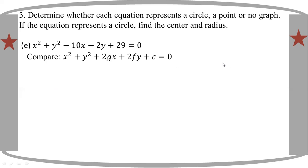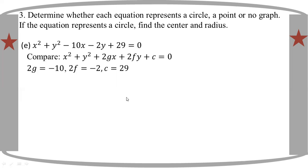That is the general form of the equation of a circle. Comparing it to X squared plus Y squared minus 10X minus 2FY plus C, we get G equals minus 5, F equals minus 1, and C is equal to 5.